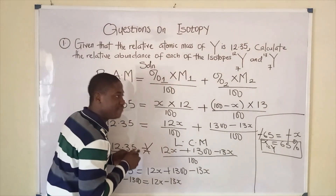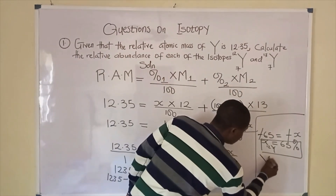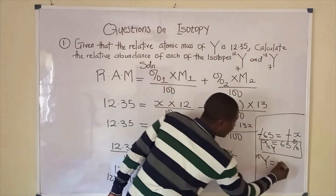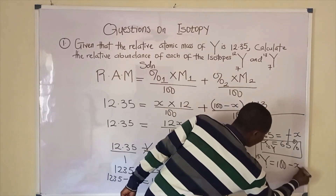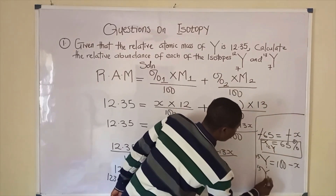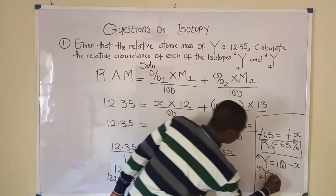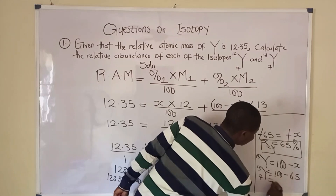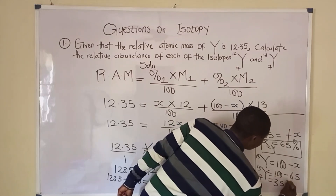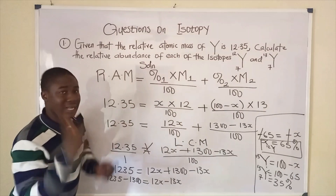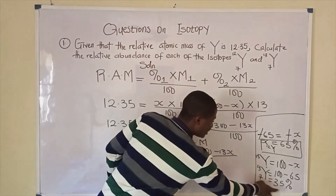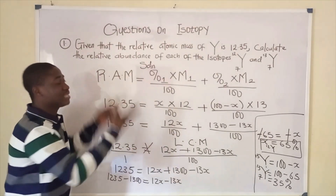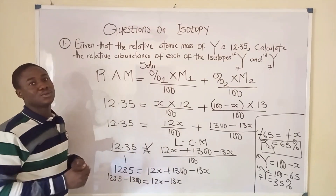The relative abundance of the second isotope Y-13 is 100 minus 65, which equals 35%. So the relative abundance of the second isotope is 35%. This is how to solve questions on isotopes.